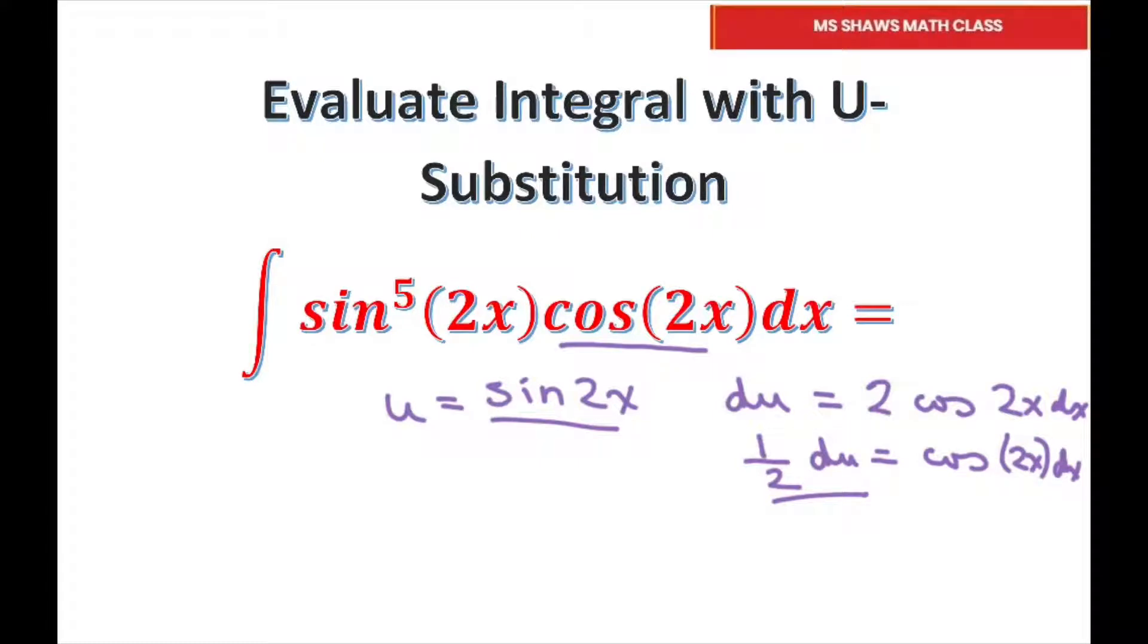So when I substitute, I have this 1 half here. Well, I'll just use that in a minute. So basically I'm going to do u to the 5th, because my u is sine of 2x, and I have to the 5th. And then cosine of 2x is du, or 1 half du. So that's going to be du, but I'm going to bring this 1 half out front.